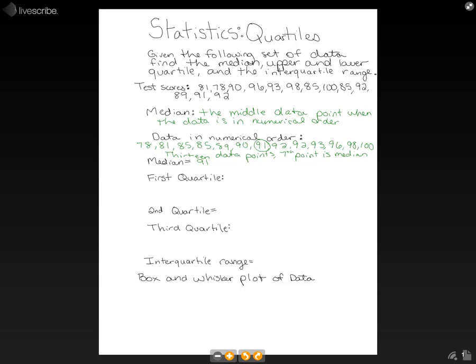So now let's look at our quartiles. Quartiles are simply medians, but they're of the smaller set. So our 91 splits our data set into an upper and a lower half of the data.